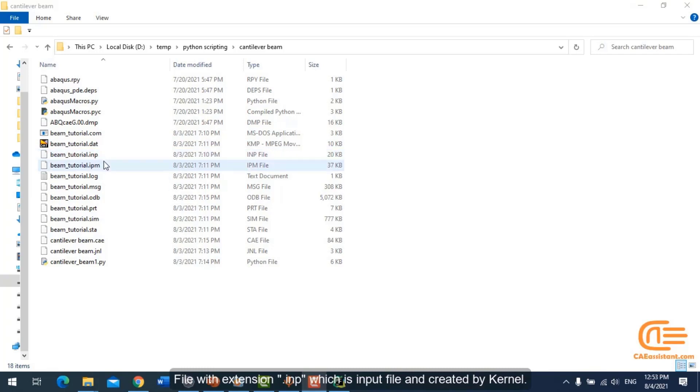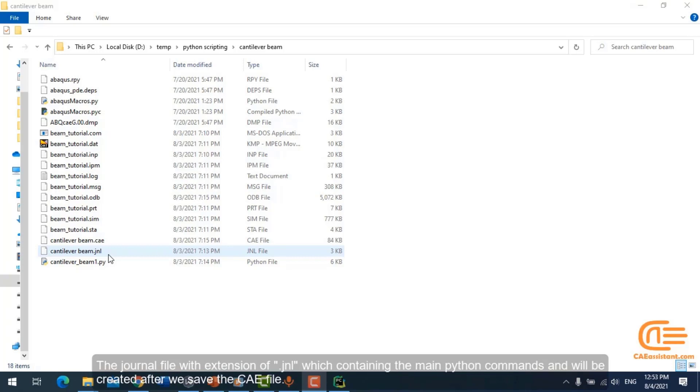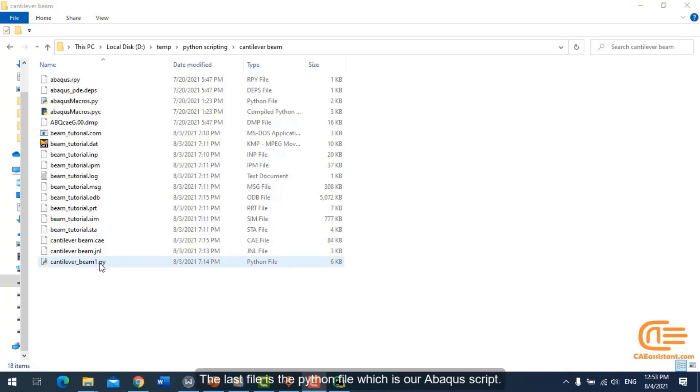File with extension .inp is the input file created by kernel. The output database file has the .odb suffix containing the result of simulation. The journal file with extension .jnl contains the main Python commands and will be created after we save the CAE file. The last file is the Python file, which is our Abacus script.